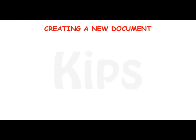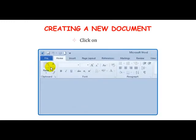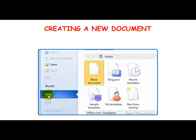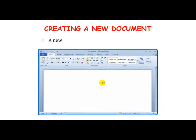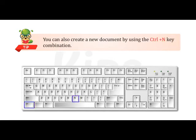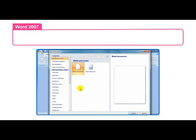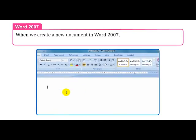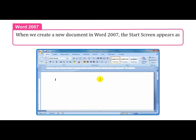Creating a New Document: Click on the File Tab, select the New option in the left pane, then click Blank Document on the right side pane — a new blank document will appear on the screen. You can also create a new document using the Ctrl+N key combination. In Word 2007, when you create a new document, the start screen appears as shown in the figure.